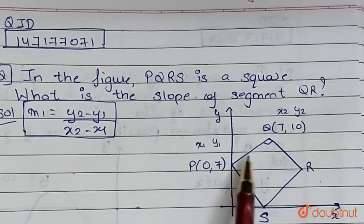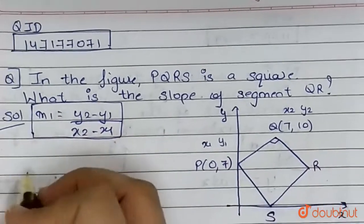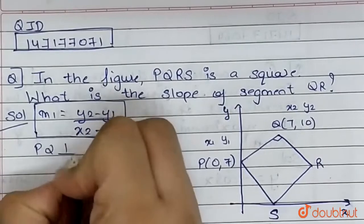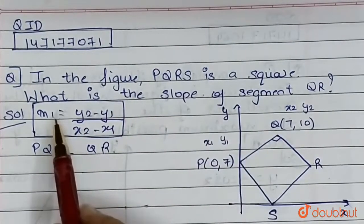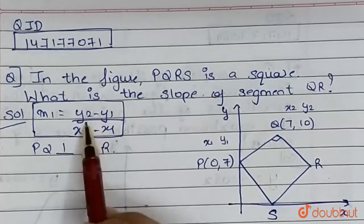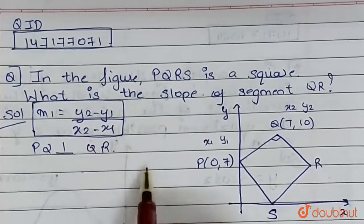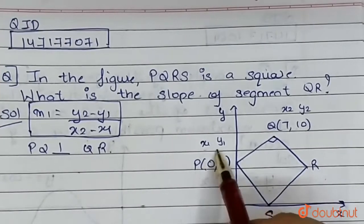But because we know that this is a square, PQ is perpendicular to QR. Now we know that slope is given by the formula y2 minus y1 upon x2 minus x1.